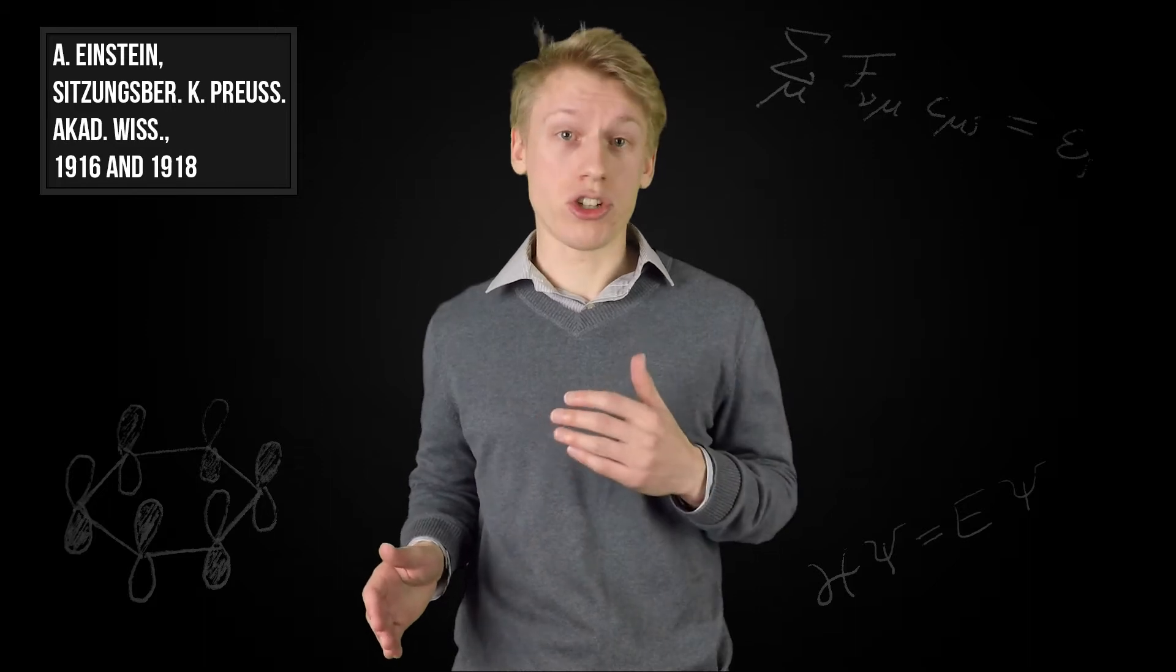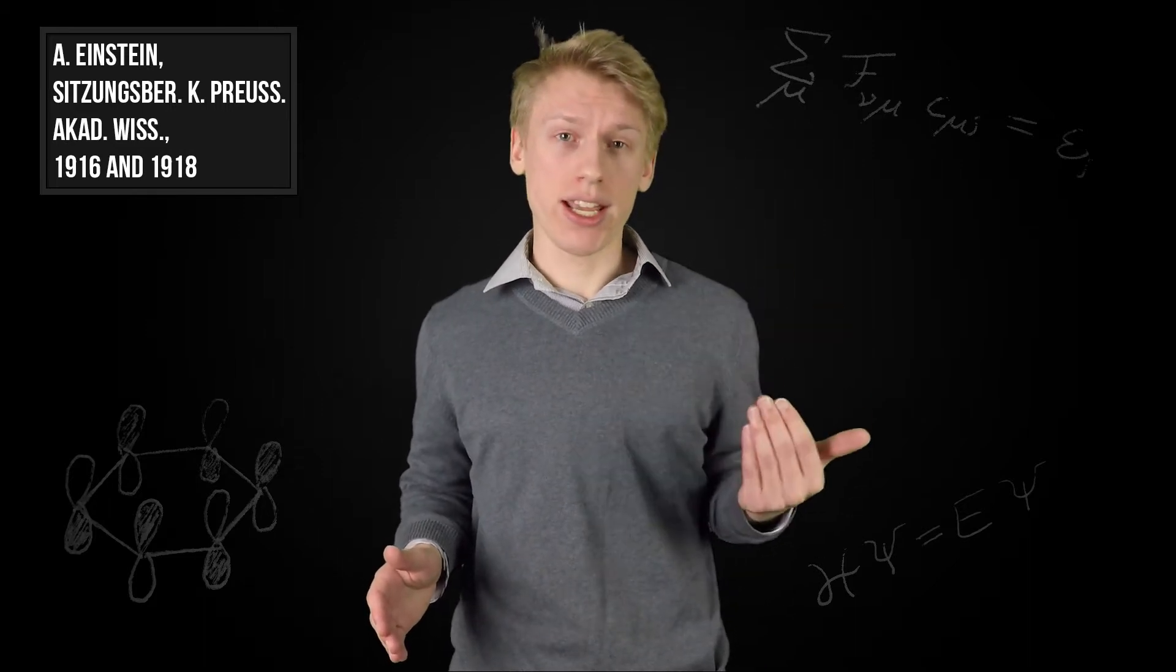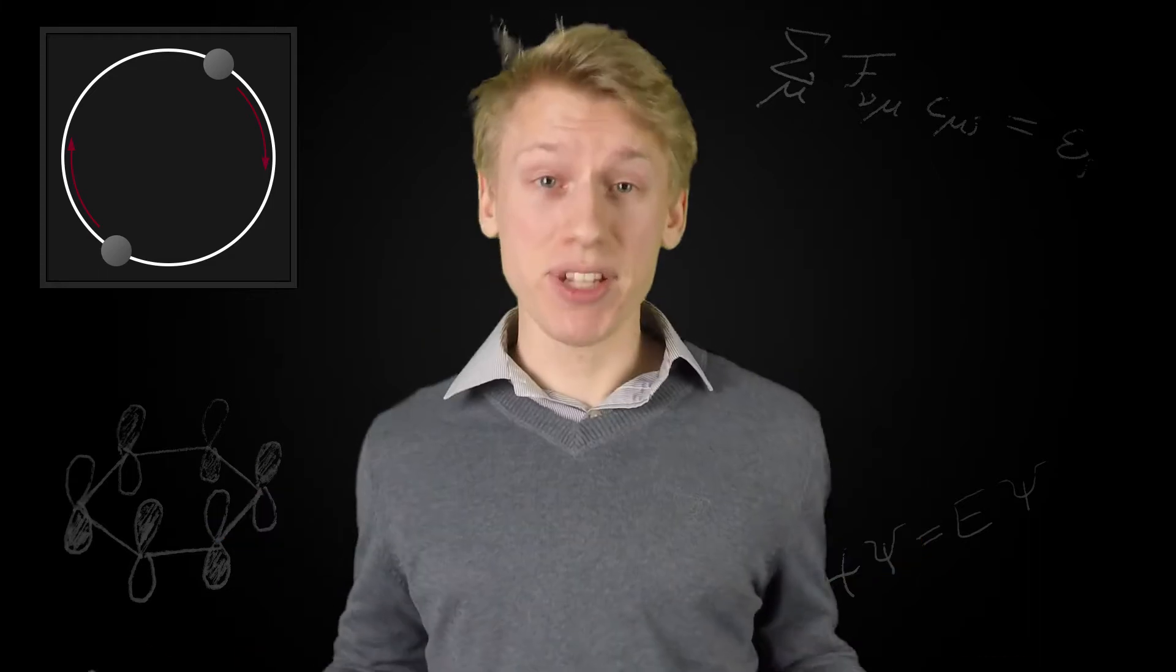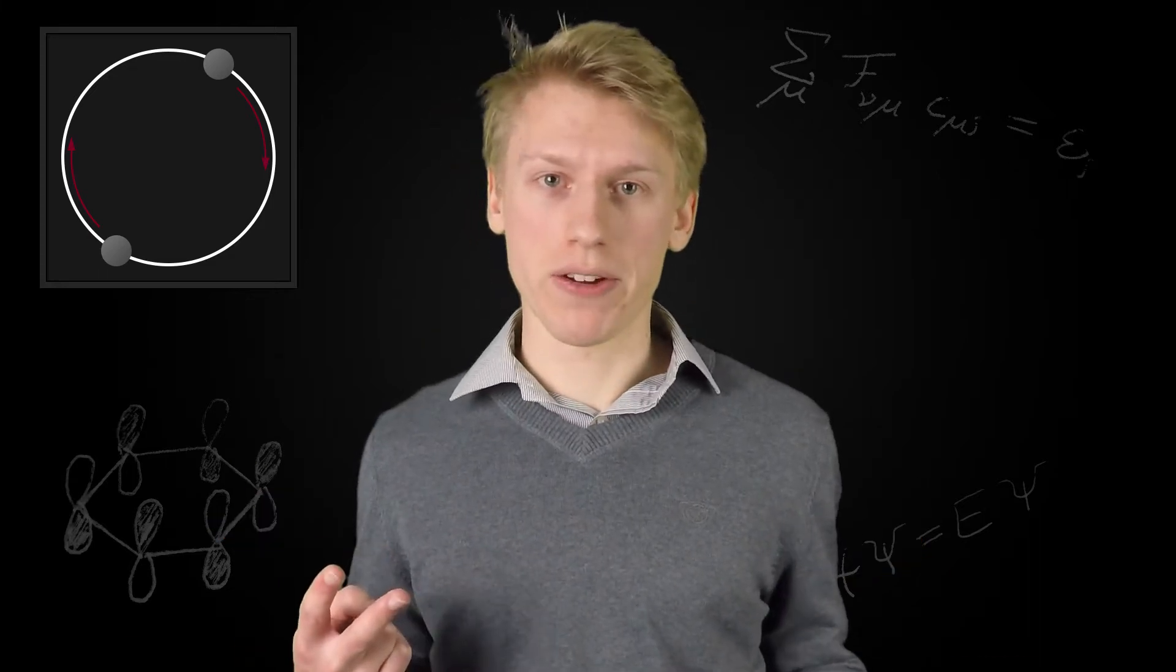Albert Einstein already predicted the existence of gravitational waves according to General Relativity, including their speed and their extremely small amplitudes. They are generated by the variations in time of a mass quadrupole of objects in space. The simplest example would be two mass points orbiting each other.